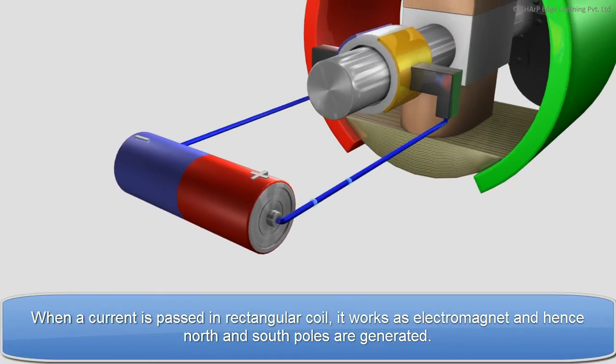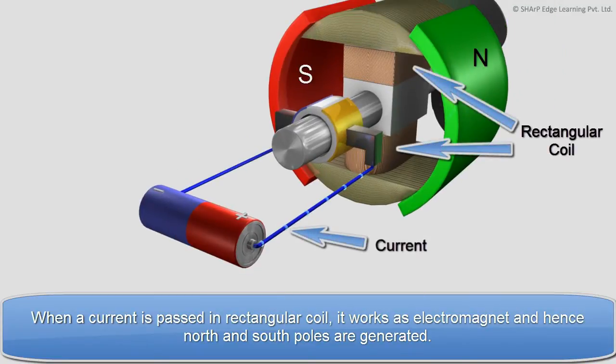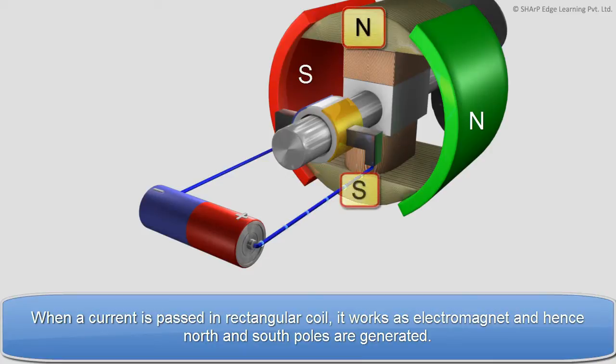When a current is passed in a rectangular coil, it works as electromagnet. Hence, north and south poles are generated.